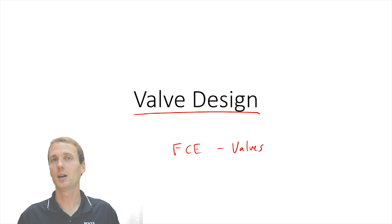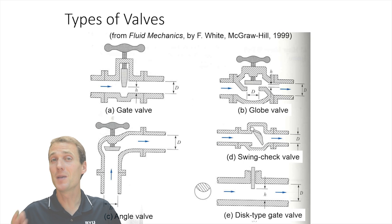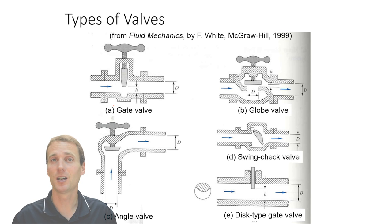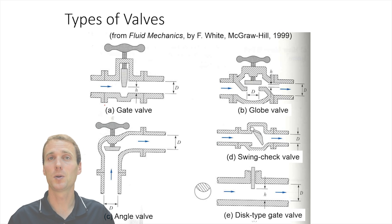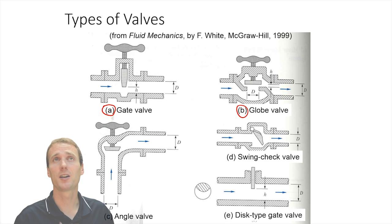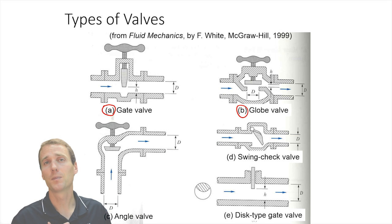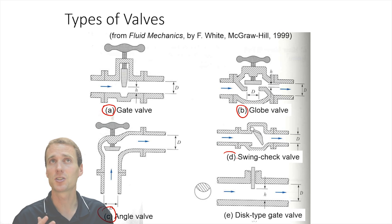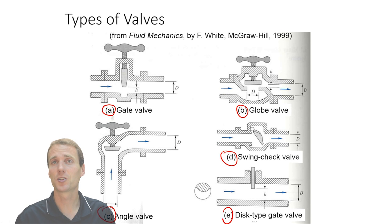There are many different types of valves. For example, you can have a gate valve, you can have a globe valve, you can have an angle valve, a swing check, and also a disc type.